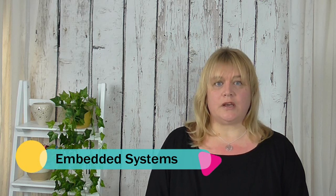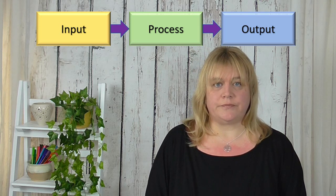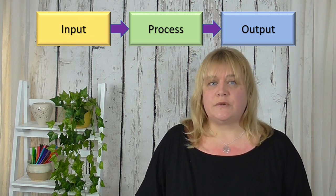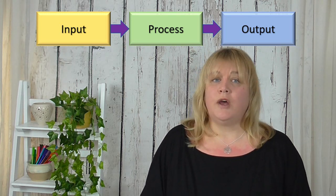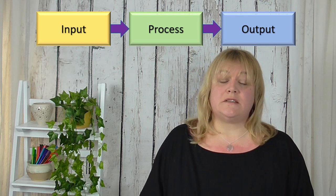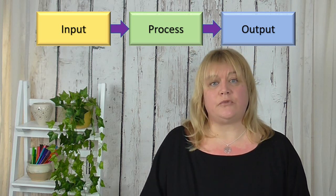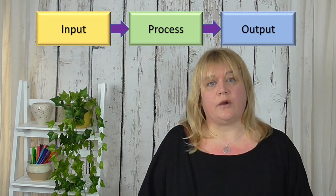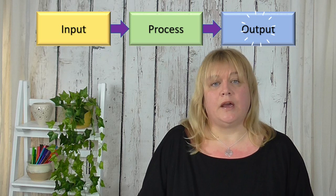In today's video we're going to be looking at embedded systems. When we think of a computer system there are three elements: an input, a process, and an output. An input doesn't just have to be what we imagine in a traditional computer system — it doesn't have to be a keyboard or a mouse. There are lots of different types of input, for instance a button press, a sensor detecting something, or even voice control. A process just means there's some sort of logic or calculation going on — if something happens, then do something else. Those types of decisions could be classed as a process.